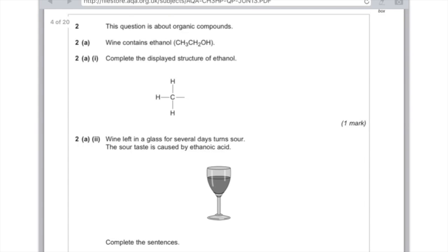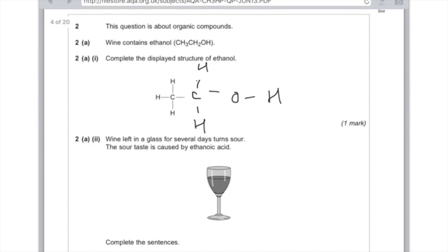So here's some questions involving what we've just been talking about. Question two, this question is about organic compounds. Wine contains ethanol, but there's its formula. Complete the displayed structure of ethanol. I can't believe they've actually given you the formula, which makes this question basically stupid, because they've given you the answer. But I'm just going to complete it for the sake of it. Remembering that carbon has four bonds, and oxygen has two, and hydrogen has one. Next up, wine left in a glass for several days turns sour. The sour taste is caused by ethanoic acid. Complete the sentences. The ethanoic acid is produced from a reaction between ethanol and oxygen. This type of reaction is oxidation.